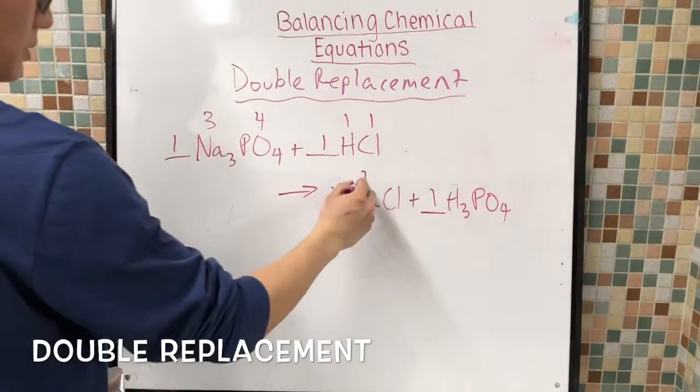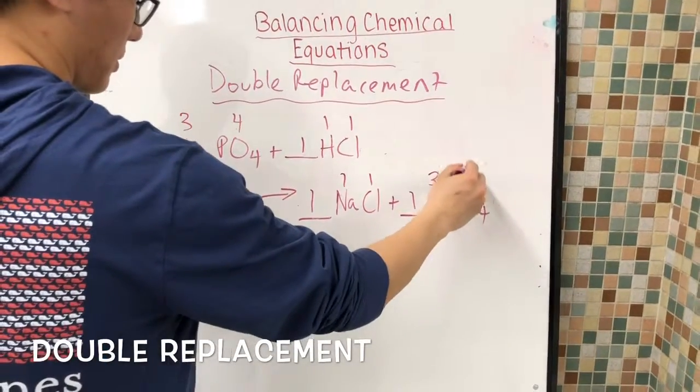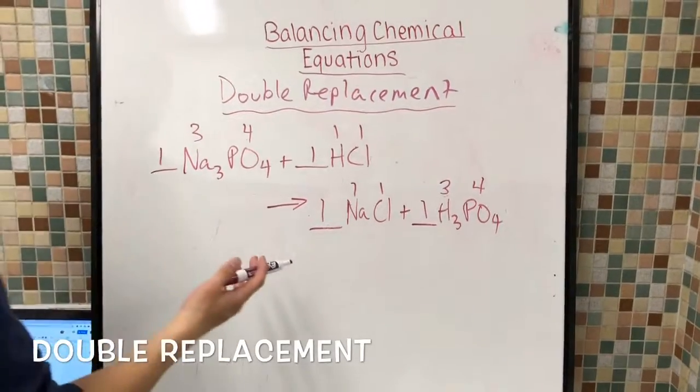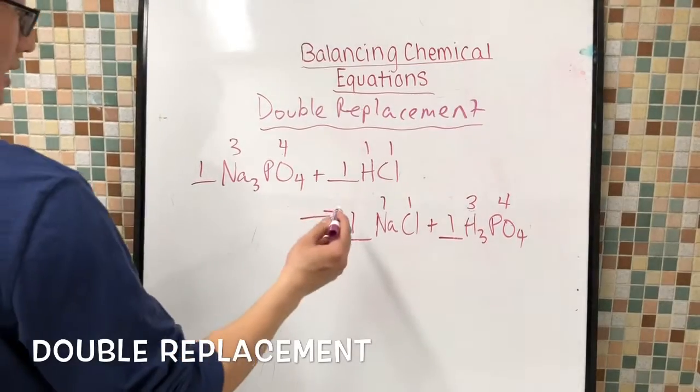And in the product, Na has one, Cl has one, H has three, and PO has four. So here, there's a clear imbalance in the compounds, and our end goal is to balance them out.